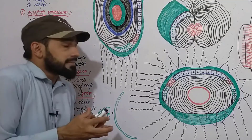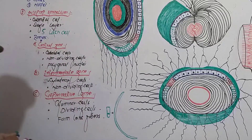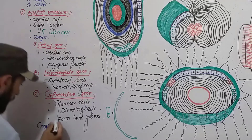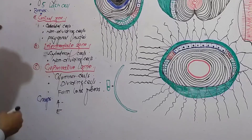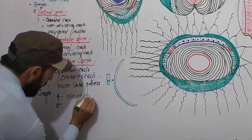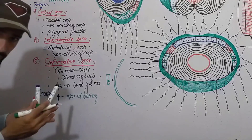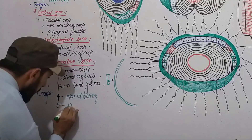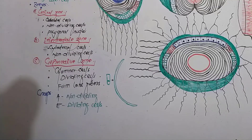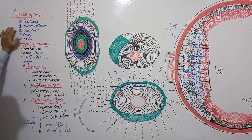The anterior epithelium cells are divided into two groups: the A cells and the E cells. The A group is the non-dividing group, which means the central zone and the intermediate zone are the A group of cells. The E group are the germinative cells, and they are dividing cells. The next lecture will discuss the lens fibers.